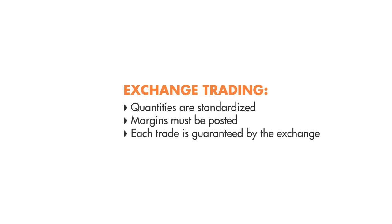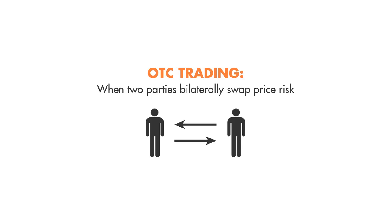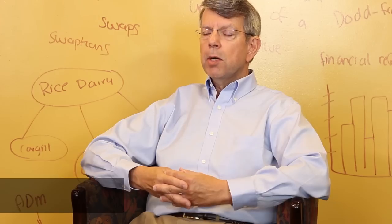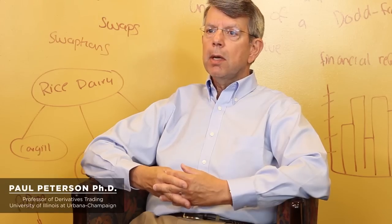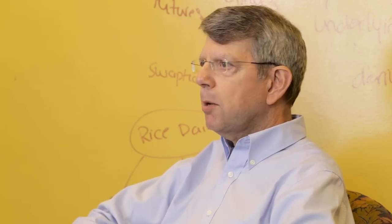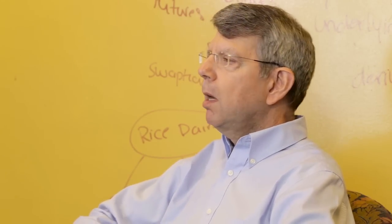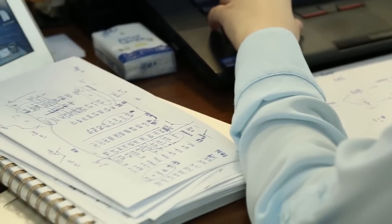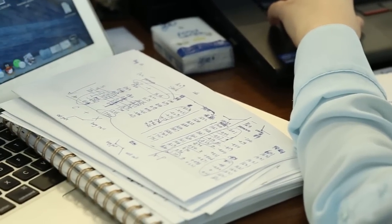Another way to trade derivatives is over-the-counter, or OTC. An OTC trade is when two parties bilaterally swap price risk. Think of it as a completely customizable futures or options contract — you're given a blank sheet of paper and you can write in any terms or conditions that you want.